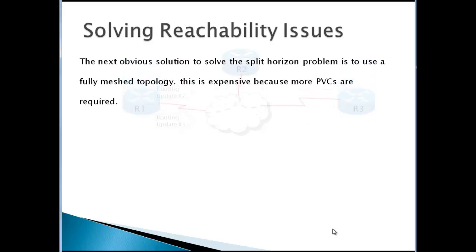The next obvious solution to solve the split horizon problem is to use a full mesh topology. This is expensive because more PVCs are required. Full mesh would fix the problem, but we have to purchase more virtual circuits, so that's still not ideal.